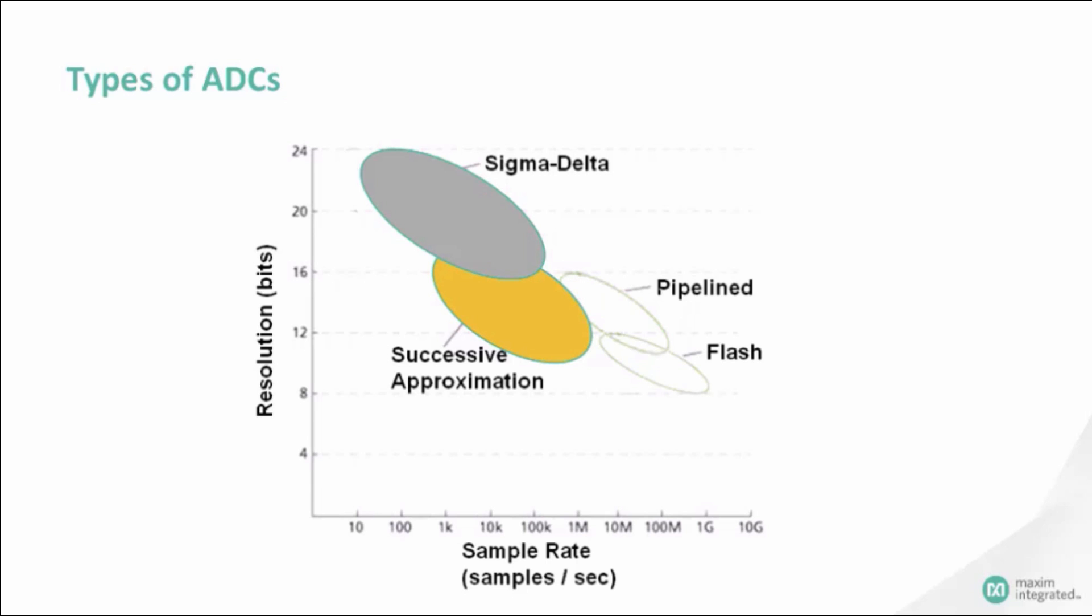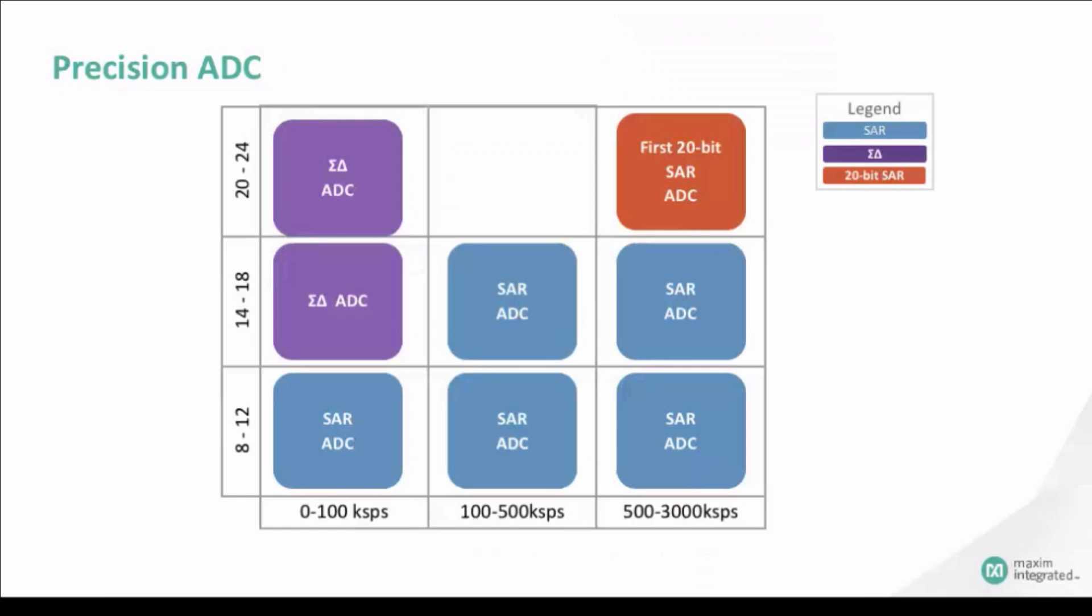For precision applications, the most popular ADCs are sigma-delta and SAR. This chart summarizes the speed and resolution that Maxim offers.